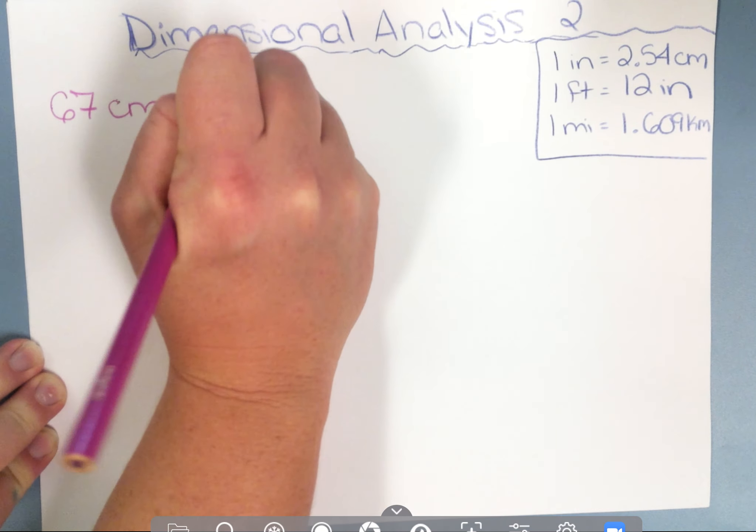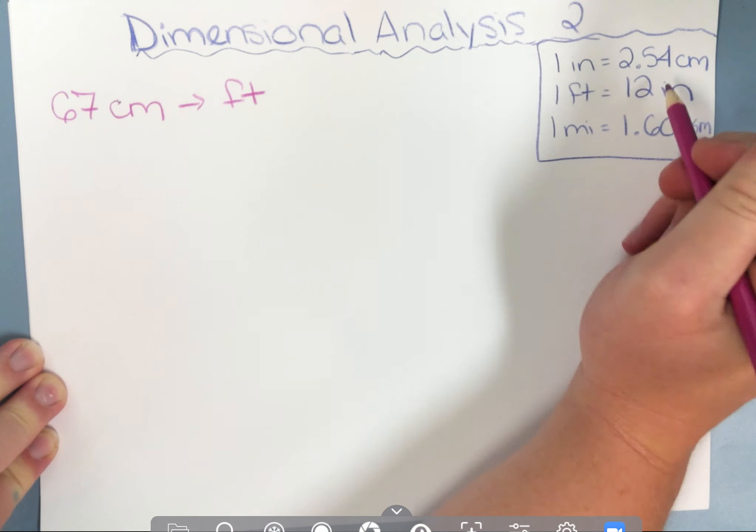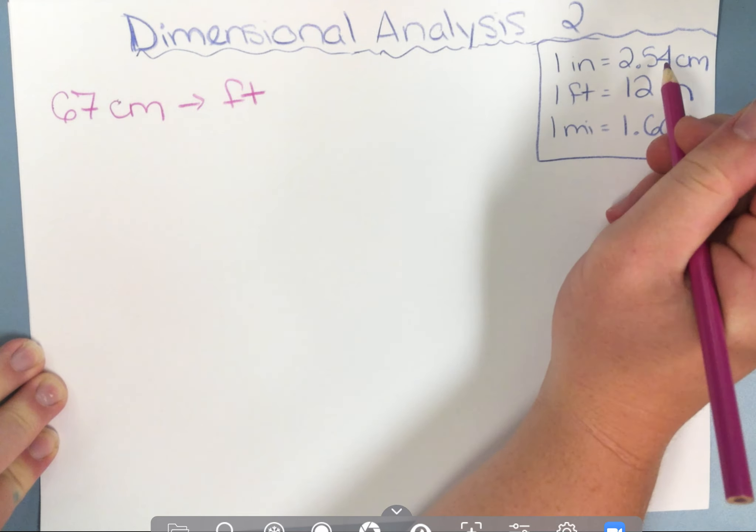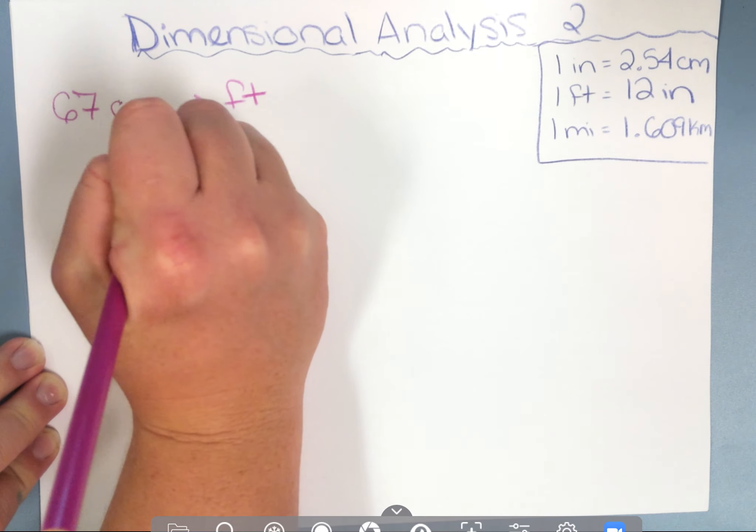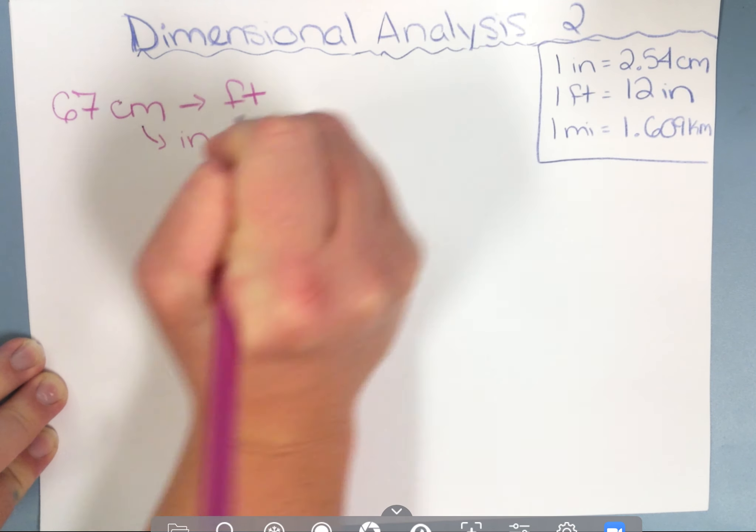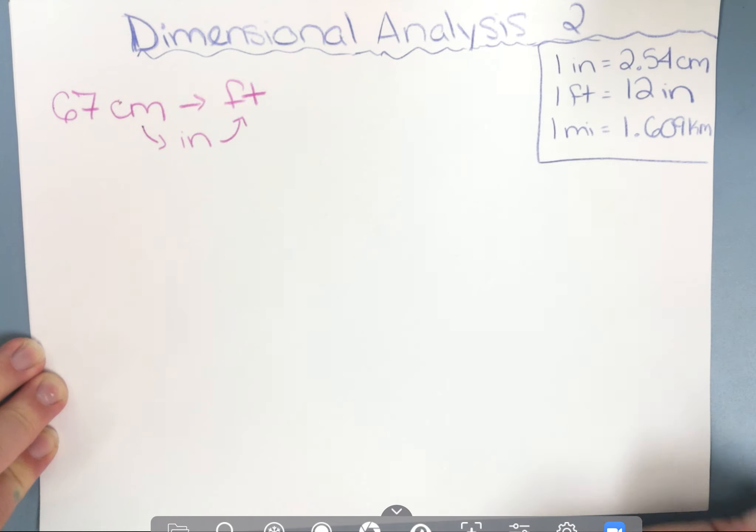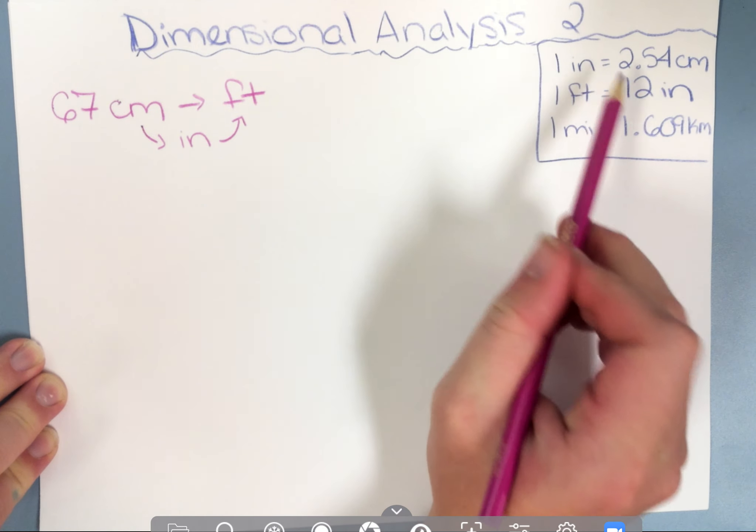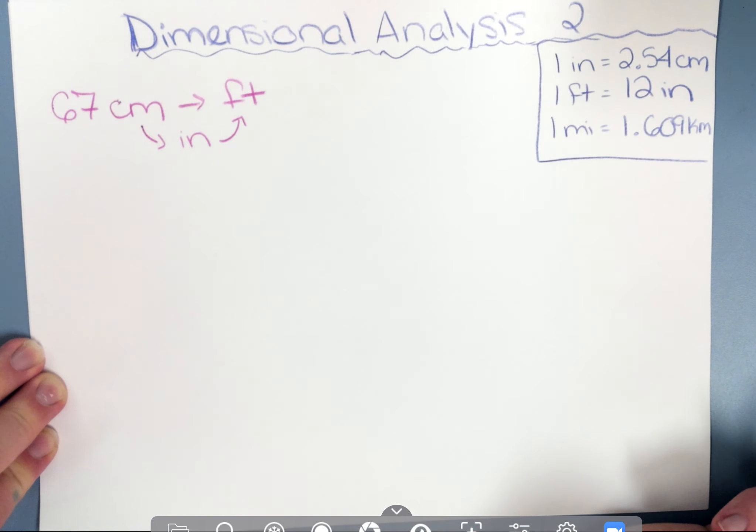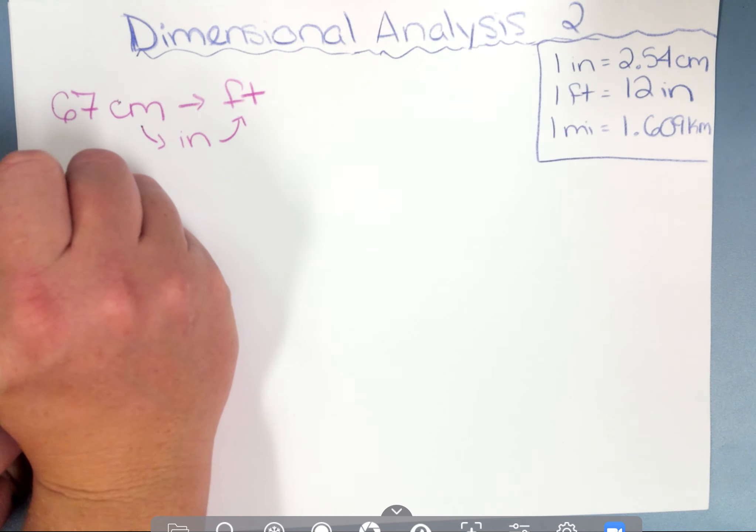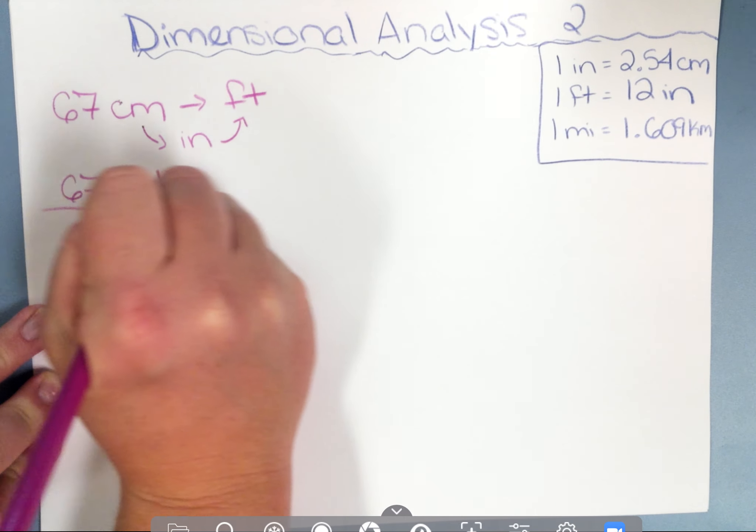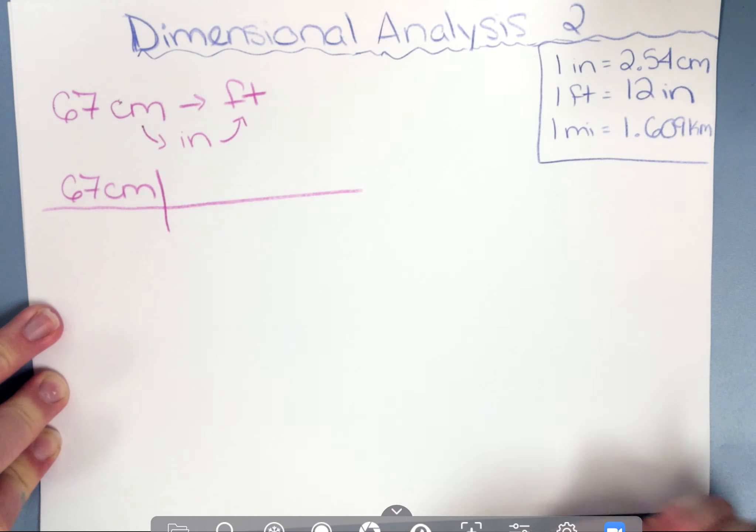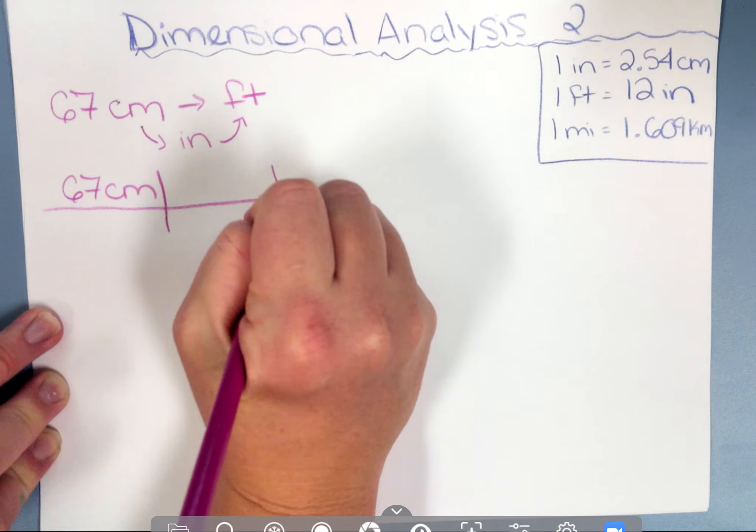If I'm going from feet to centimeters, I don't know how many centimeters are in a foot. So I'm going to have to go from centimeters to inches, and then inches to feet, because these are the conversion factors that I have. So I'm going to start with my 67 centimeters. I'm going to draw my boxes. Now if I know I'm going to make a pit stop in the middle, I'm going to have an extra set.